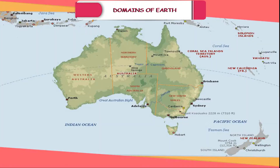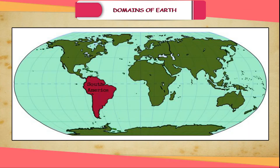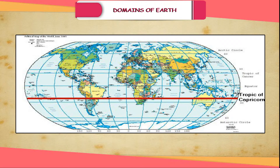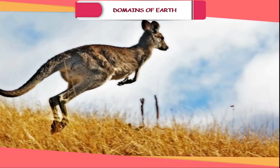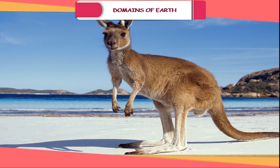Australia. The name Australia comes from the Latin word 'Australis' meaning Southern. This continent lies entirely in the southern hemisphere. The Tropic of Capricorn passes through the middle of this continent. It is also called the island continent because it is surrounded on all sides by the oceans. This is the smallest continent and a country as well. Kangaroo is the unique animal of this continent.